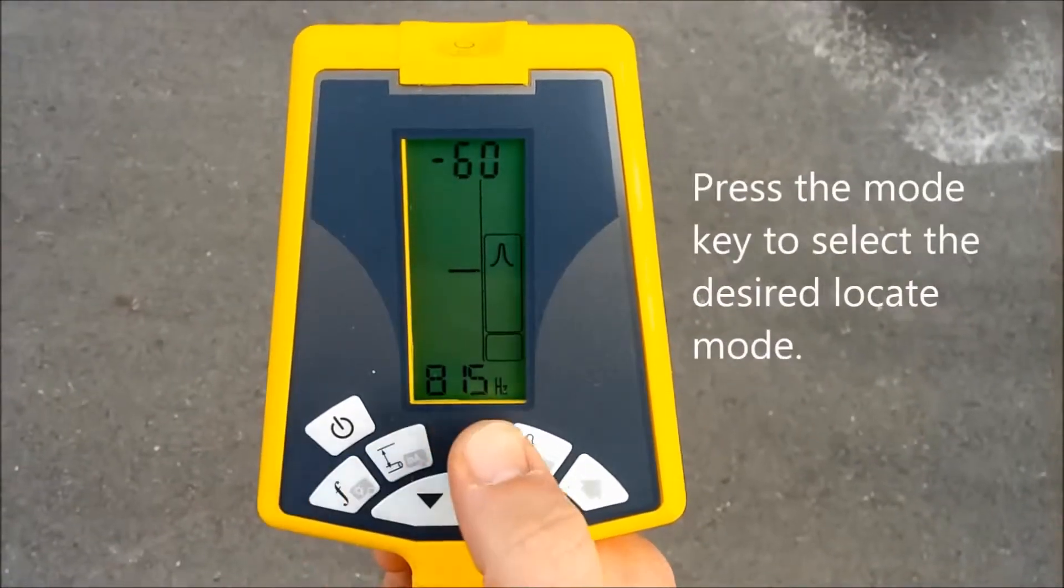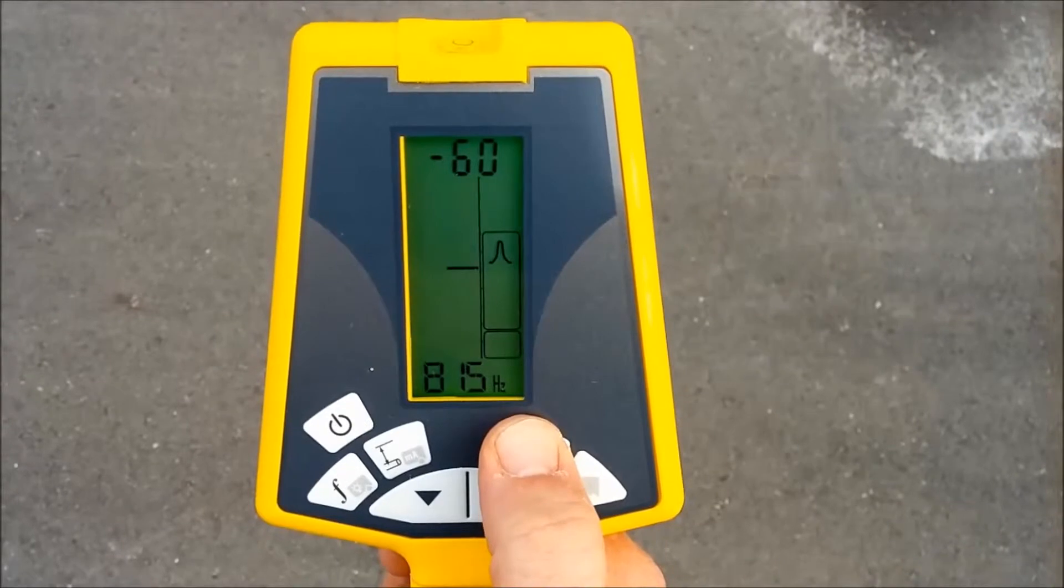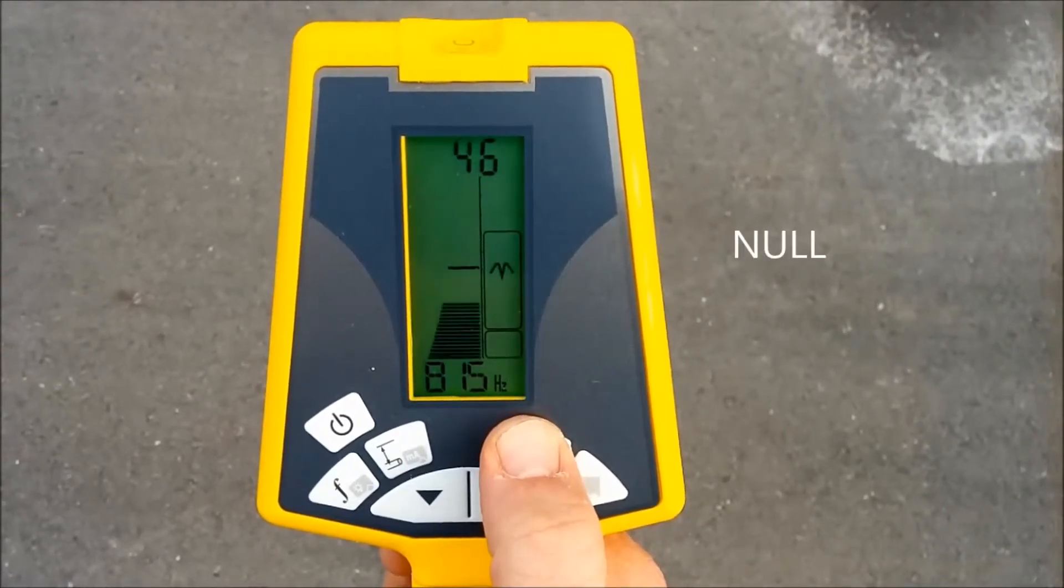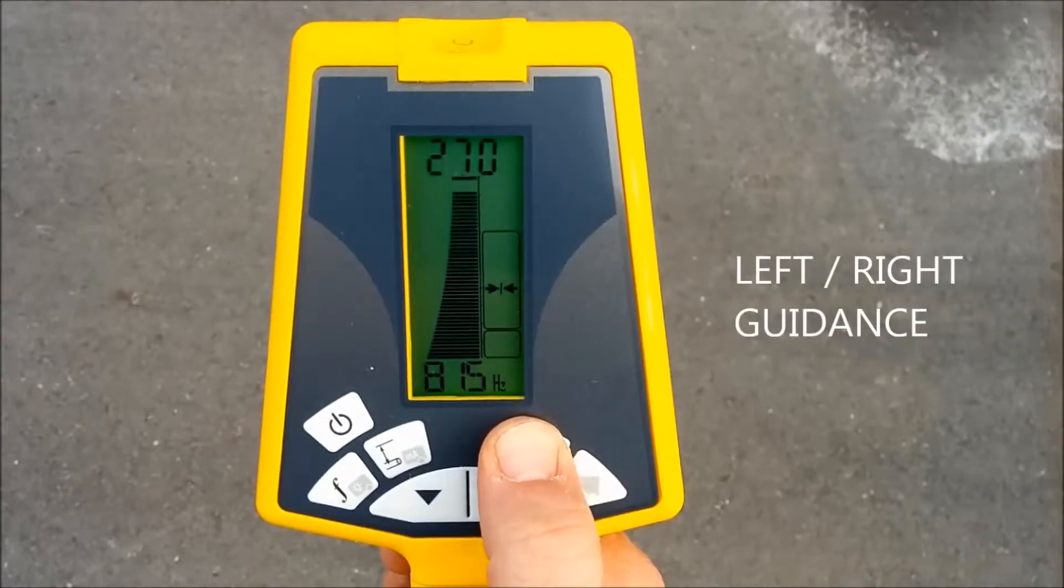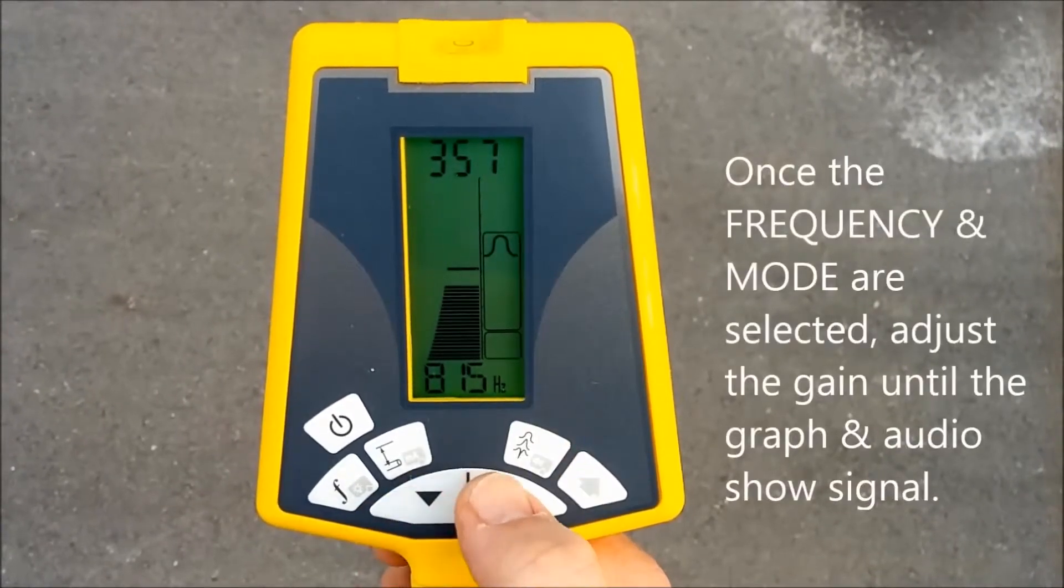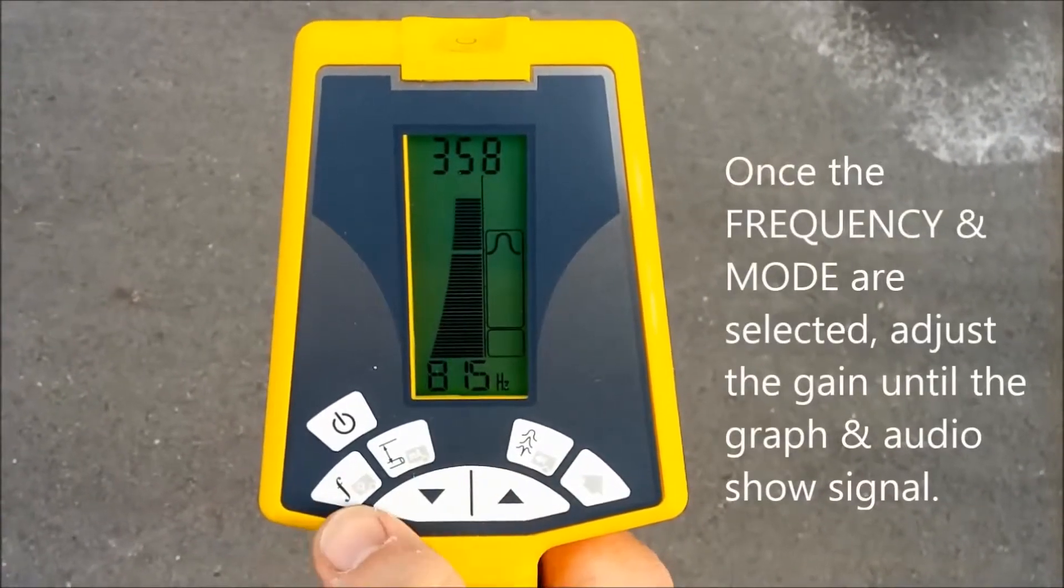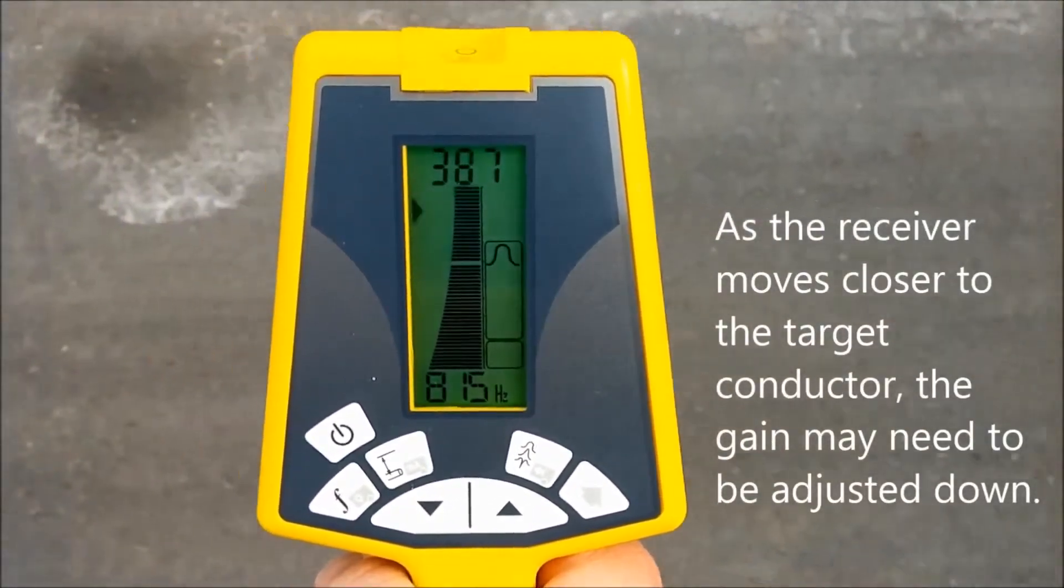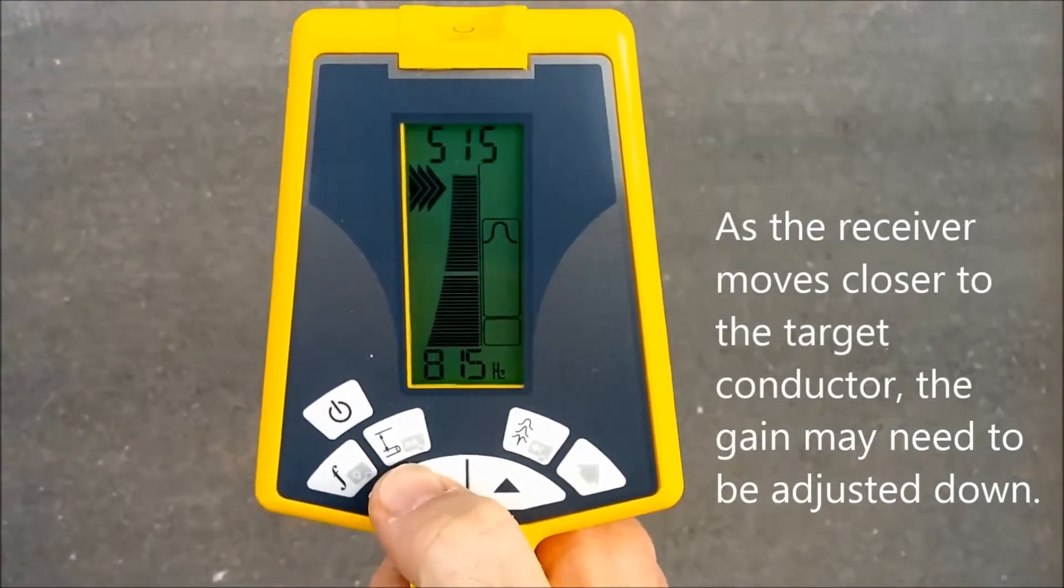Press the mode key to select the desired locate mode. Common modes include peak, pinpoint peak, null, and left-right guidance. Once the frequency and mode are selected, adjust the gain until the graph and audio show signal. As the receiver moves closer to the target conductor, the gain may need to be adjusted down.